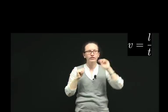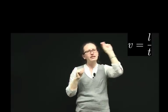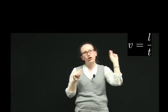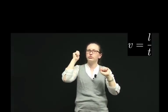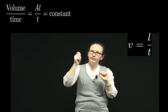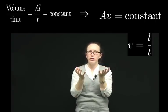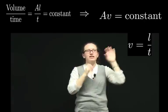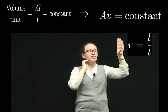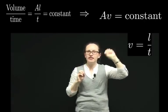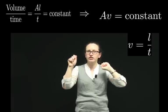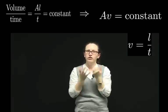So we're going to give that speed the symbol v. The length travelled over the time is equal to v, and so we can write our equation as the surface area times the velocity is constant.